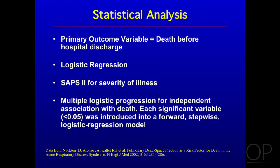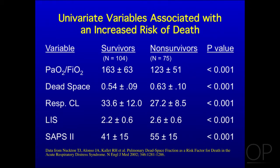Statistical analysis used death before hospital discharge as the primary outcome variable, with logistic regression, SAPS II for severity of illness, and multiple logistic regression for independent association with death. At the end of the study, there were several univariate variables that were associated with death, which you would expect. Let's just go through them briefly.